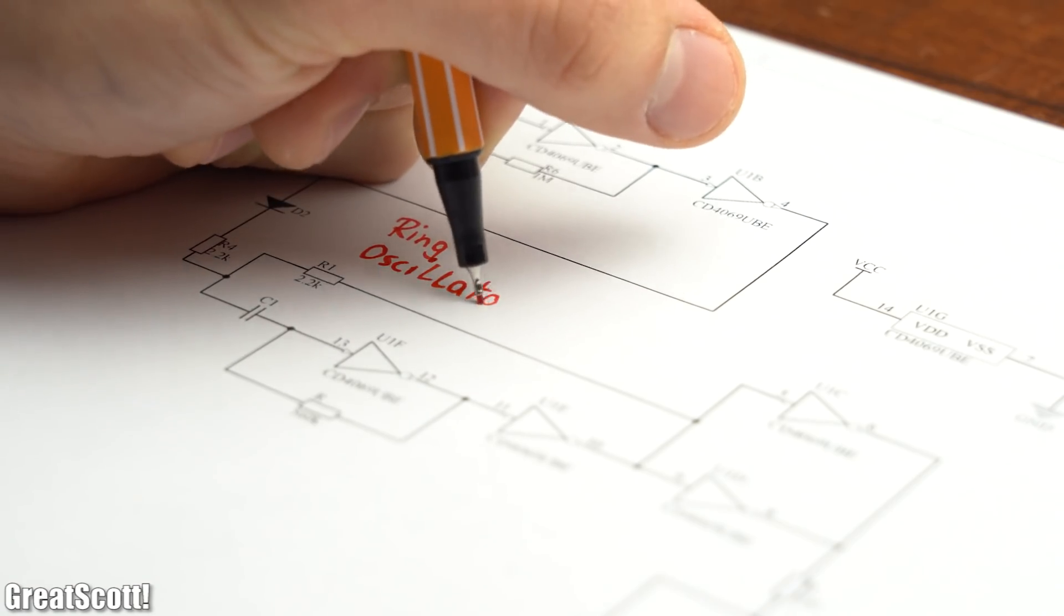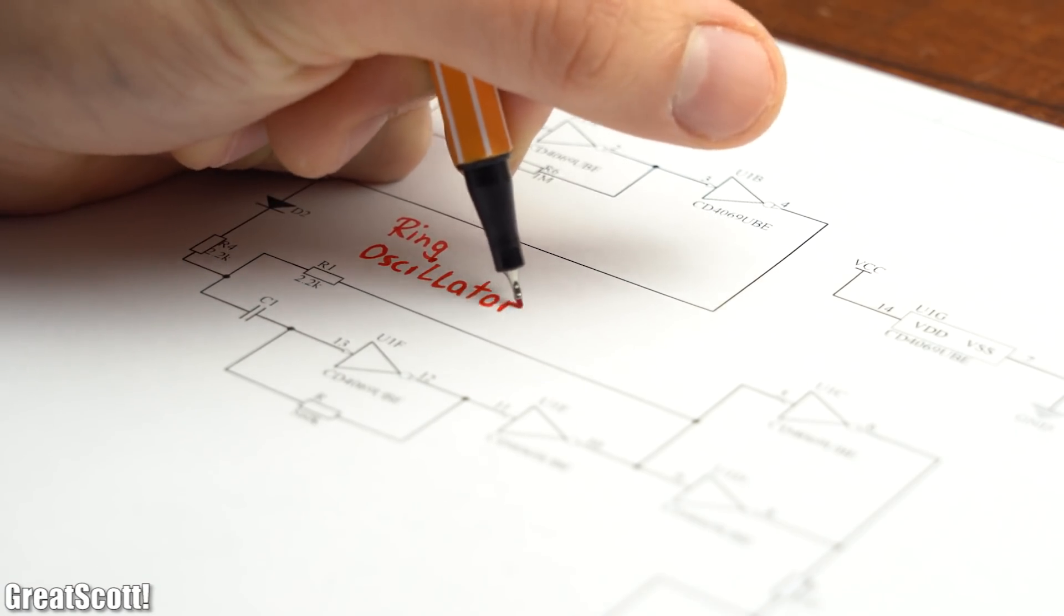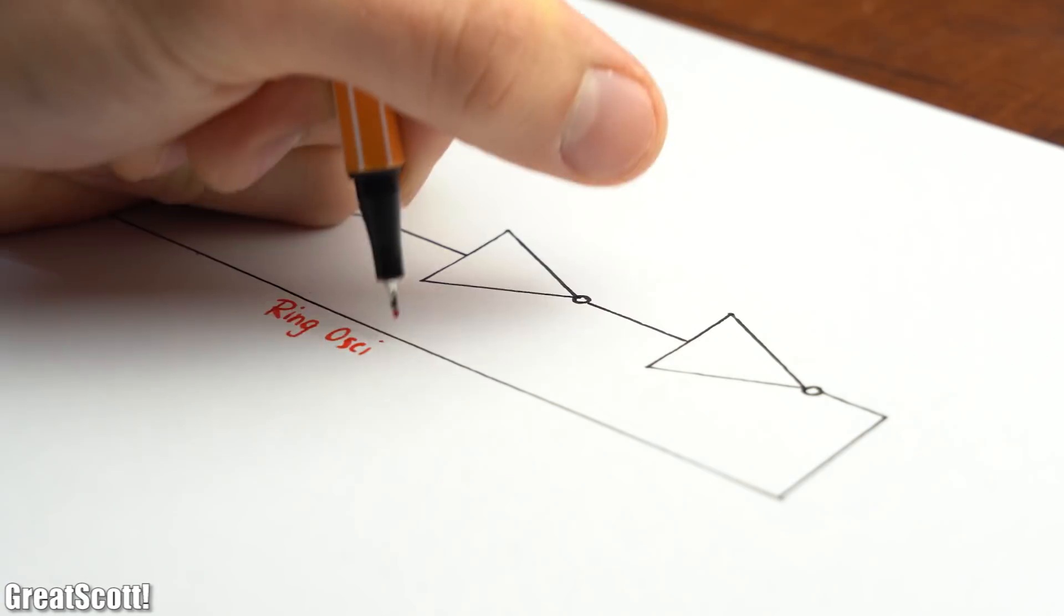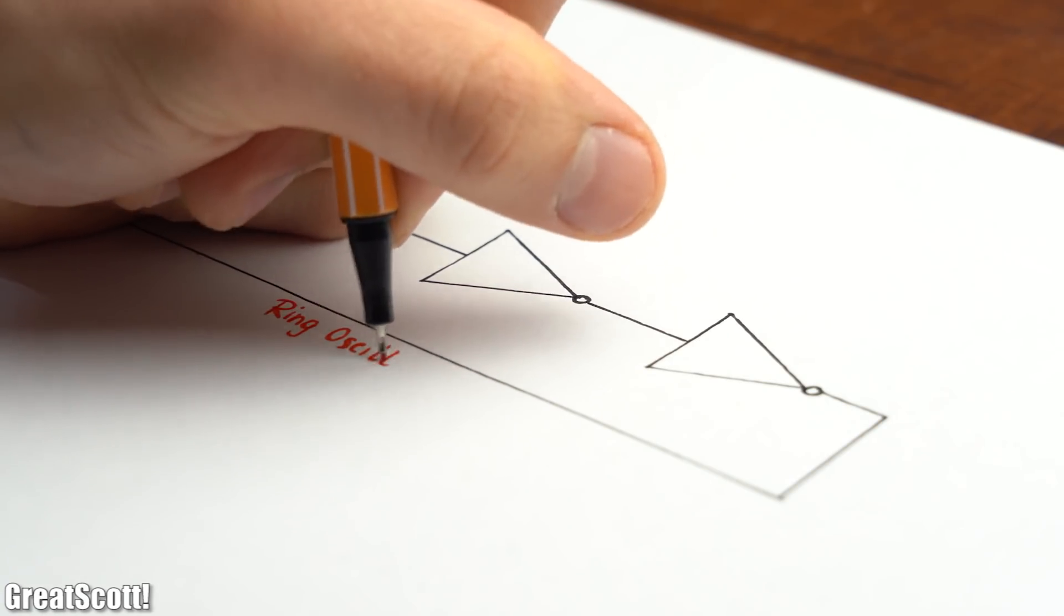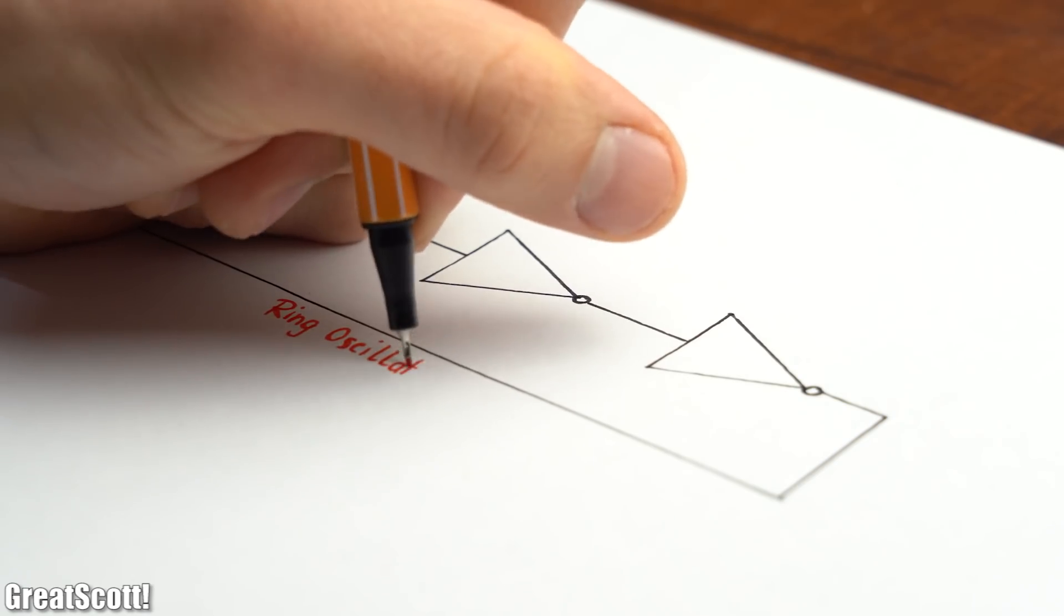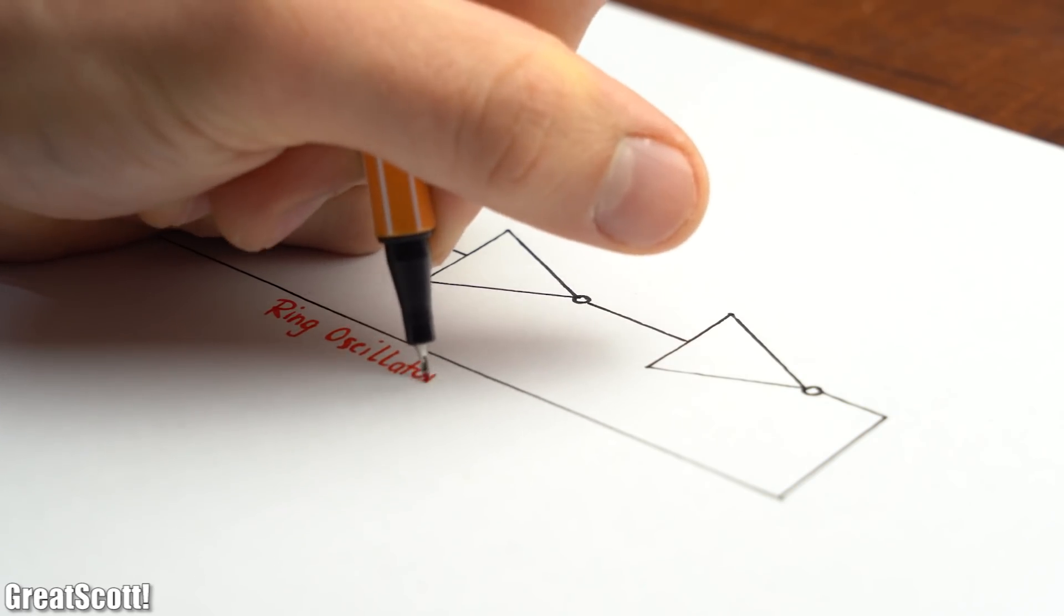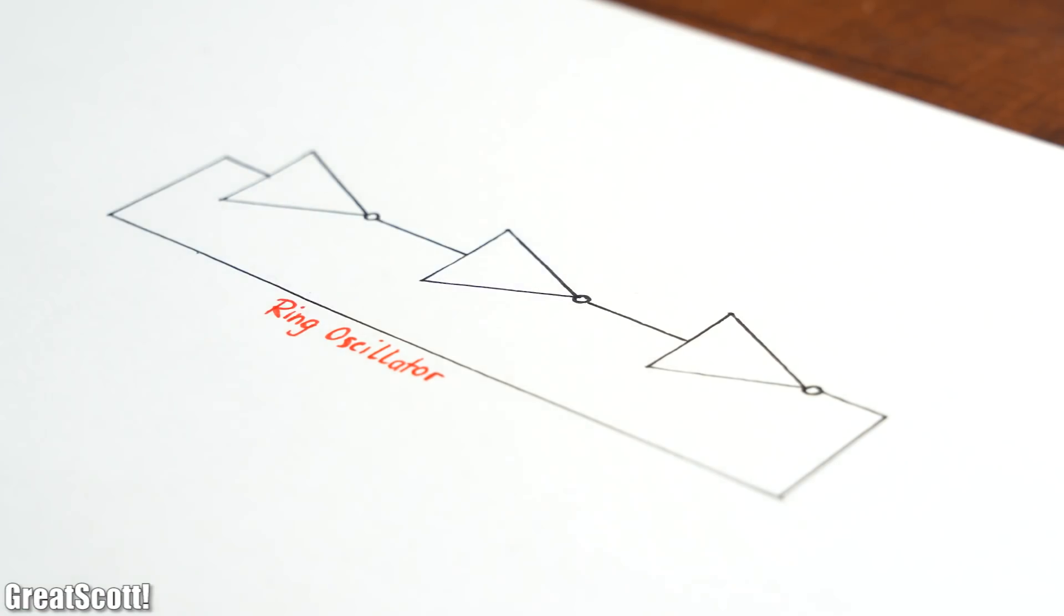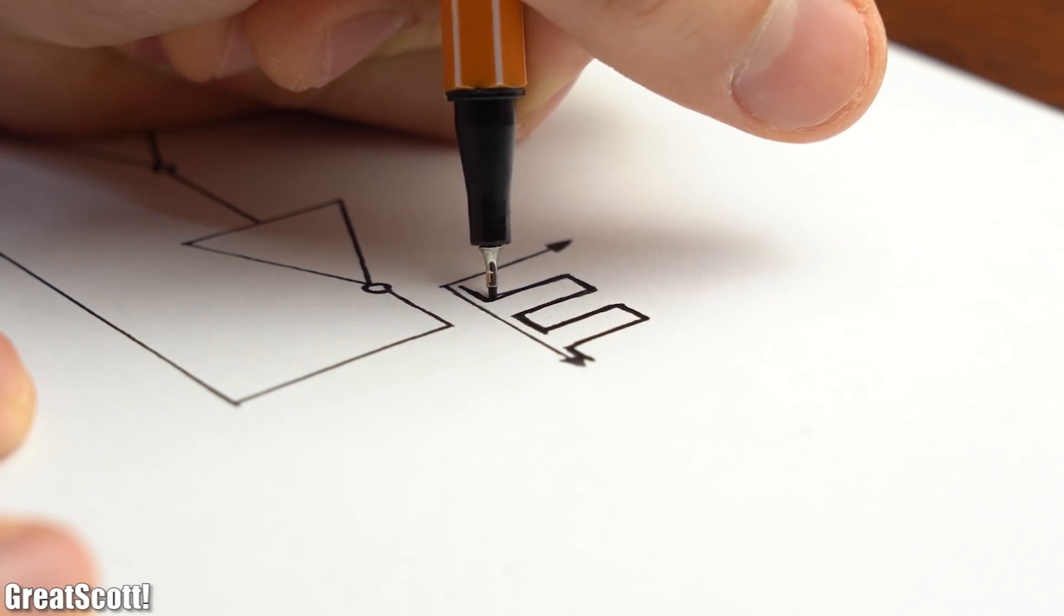The first thing that came to my mind while seeing this was a ring oscillator. To create one, you have to put an odd number of inverter stages in series with the last one feeding back into the first, which creates a square wave on the output.